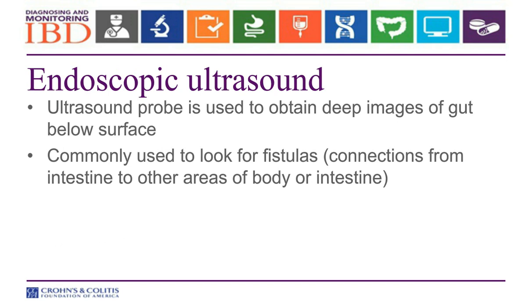An endoscopic ultrasound is another kind of scope test. Most are familiar with external ultrasound — a handheld device that looks at your gallbladder or, when women are pregnant, looks at the baby. We now have ultrasound cameras fashioned onto the end of endoscopes. We can go into the stomach and ultrasound from there, and we can also do ultrasounds of the rectum to look for fistulas — connections of the rectum to the outside world — and this is really helpful for monitoring and diagnosing people who have bad Crohn's disease.